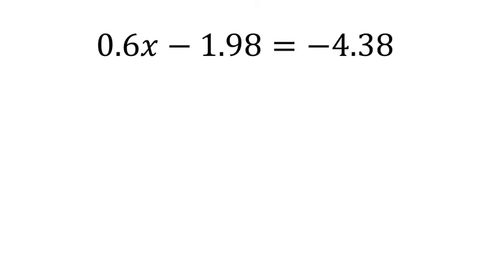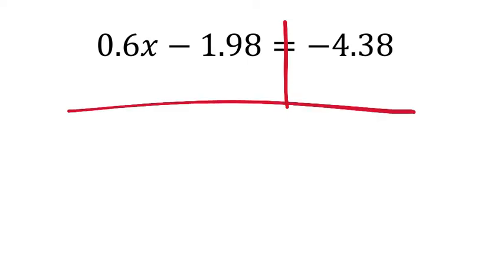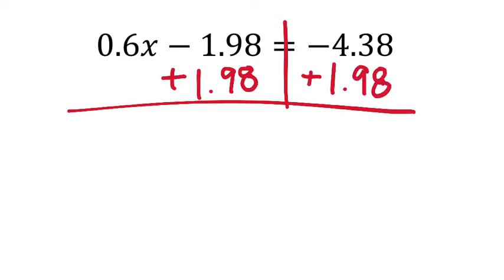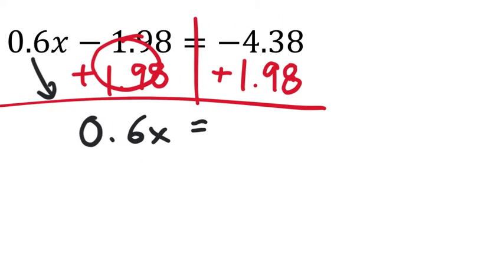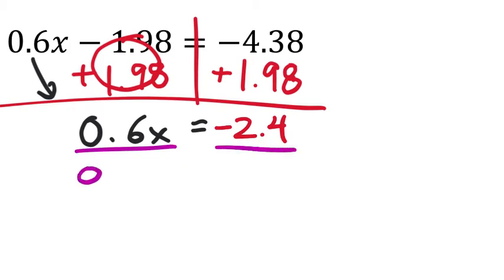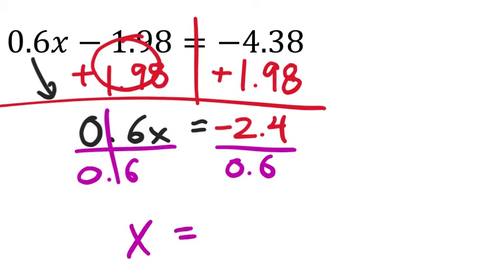I like these equations because they get smaller as we go. I want to isolate my x's — I don't want that minus 1.98 — so add 1.98 to both sides. Whatever you do to one side, you do to the other. That zeros it out. I'll drop my 0.6x. This equals negative 4.38 plus 1.98, which is negative 2.4. Now divide both sides by the coefficient 0.6. x equals negative 2.4 divided by 0.6, which comes out as negative 4.